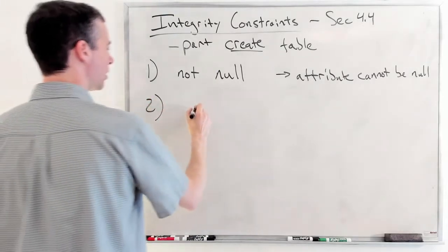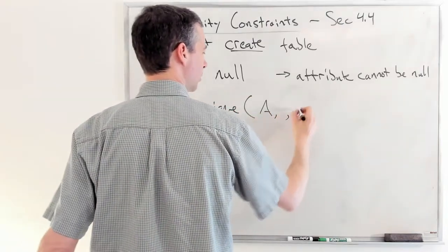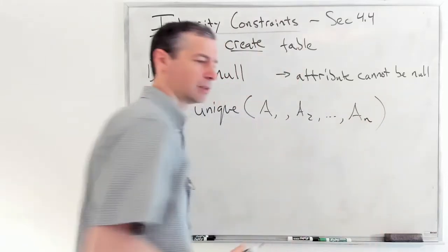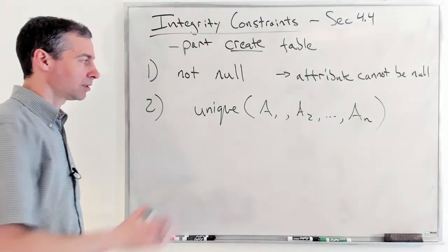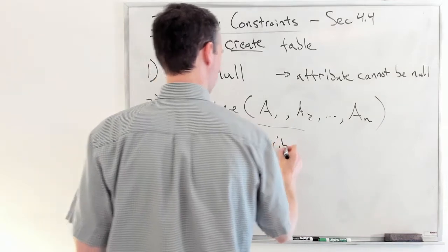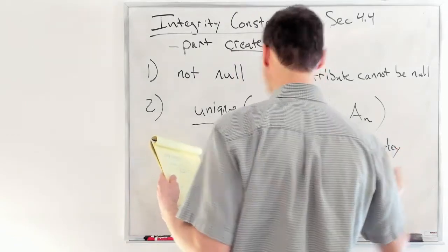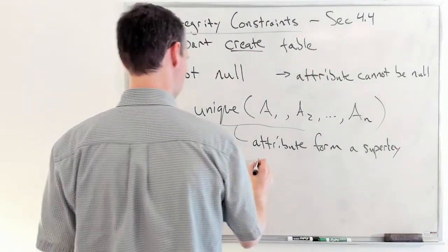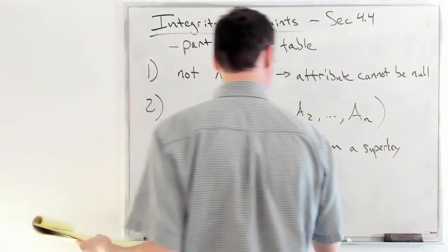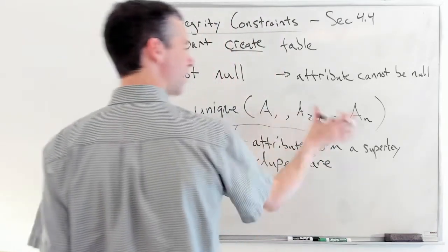The next one, you can define a set of attributes to be unique. So attribute one, attribute two, on up to however many attributes you have on that table. What you're basically doing here is saying that these attributes taken together are forming a super key. I'll call them dupes or duplicate rows with those attributes are not allowed.